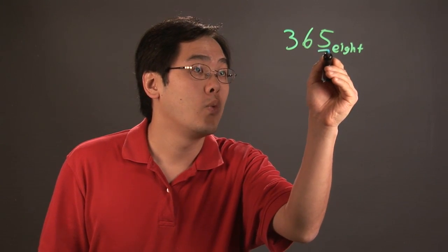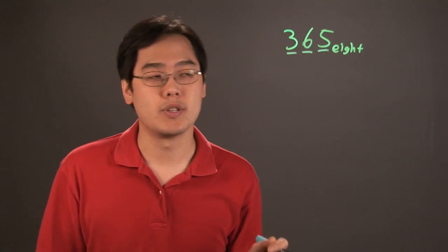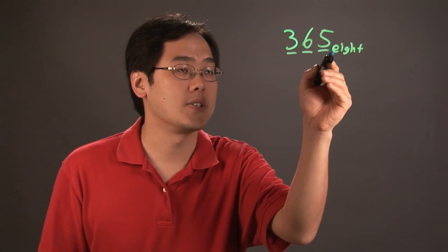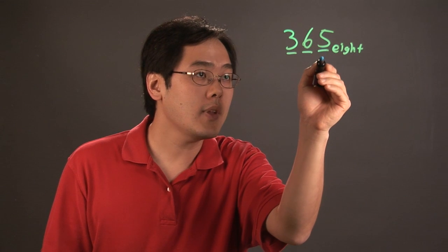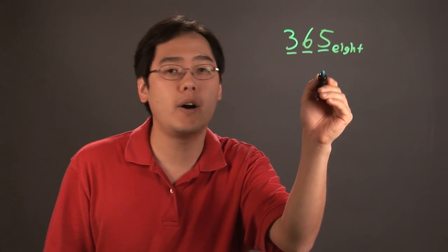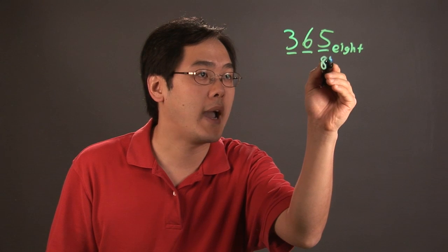Now what you want to consider is the placeholders of these things. What places are they in? You want to start with the one on the very right, the smallest base for base 8, and that's going to be 8 to the 0 power.